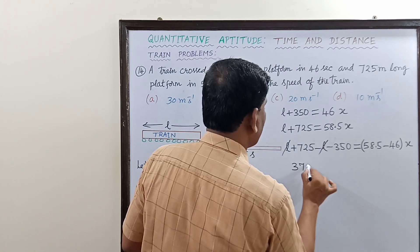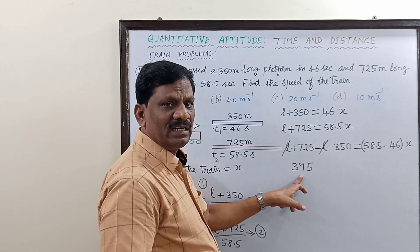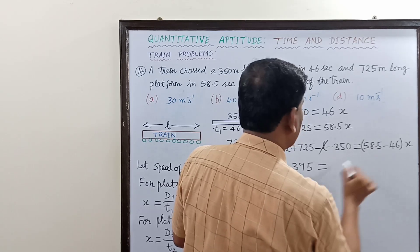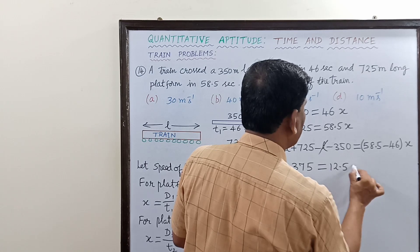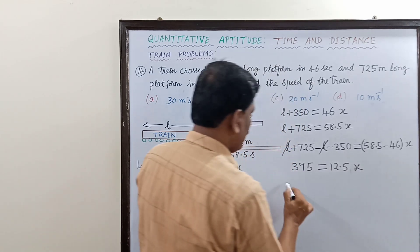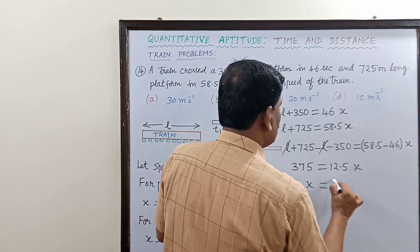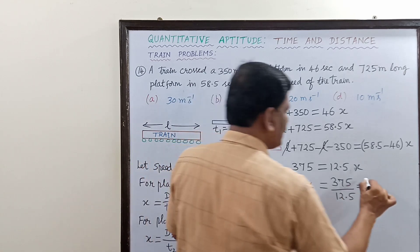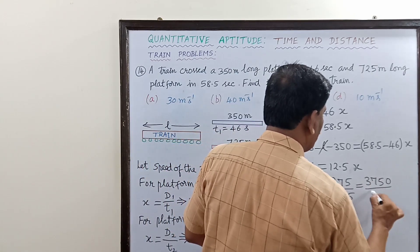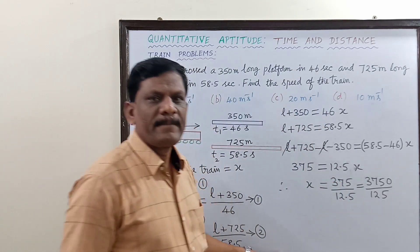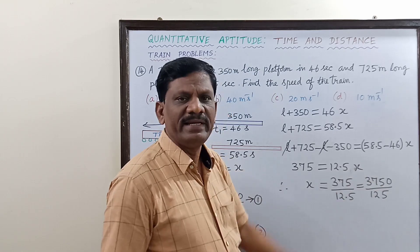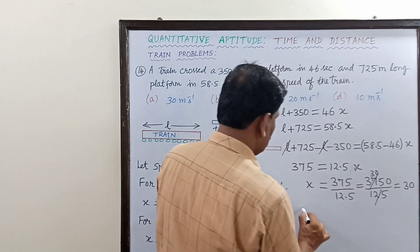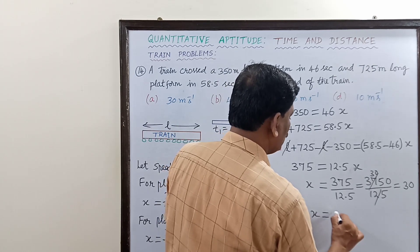So 375 equals 12.5 times X. Therefore X equals 375 divided by 12.5. Multiplying numerator and denominator by 10 gives 3750 divided by 125. Since 125 times 30 equals 3750, X equals 30. Therefore the speed of the train is 30 meters per second.